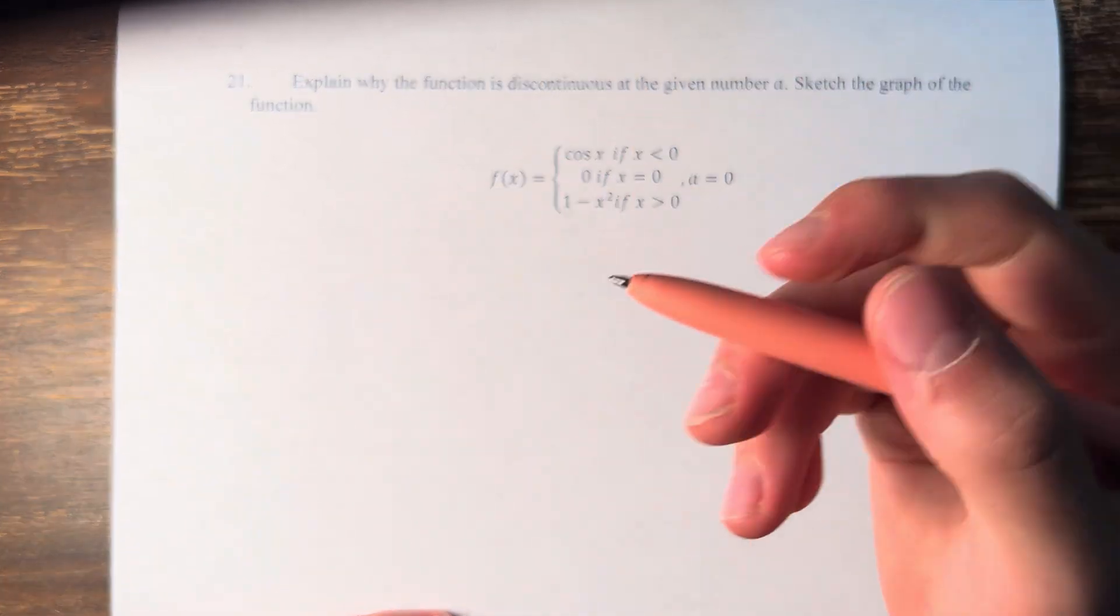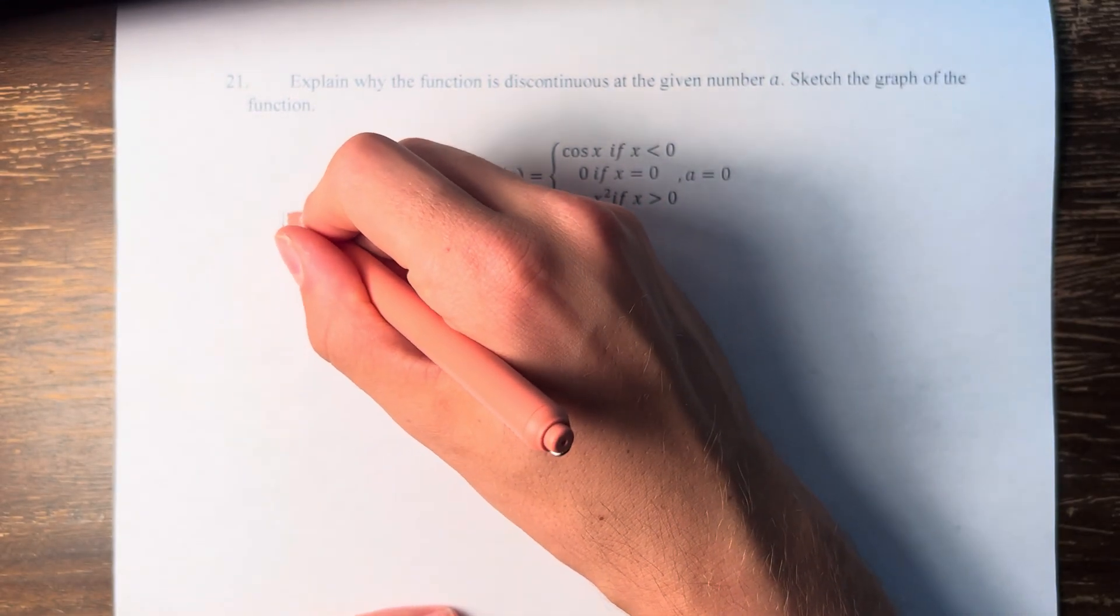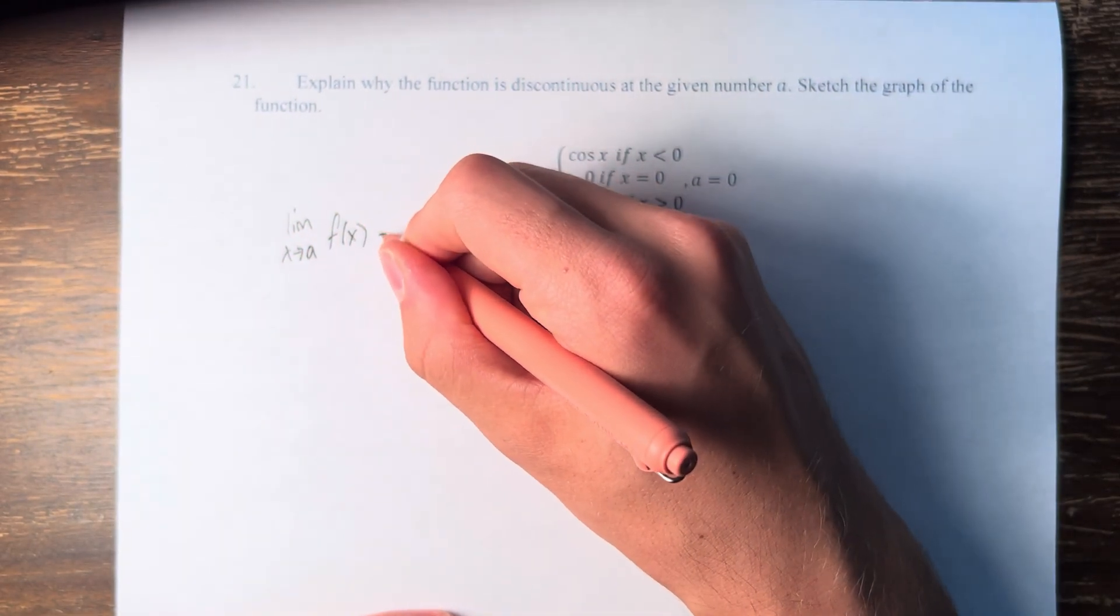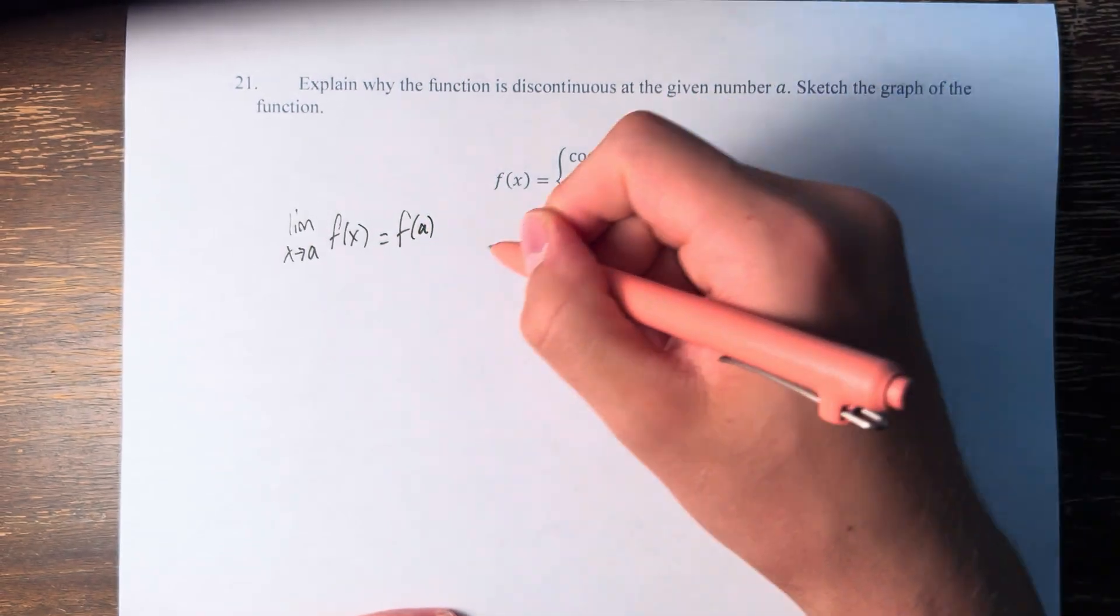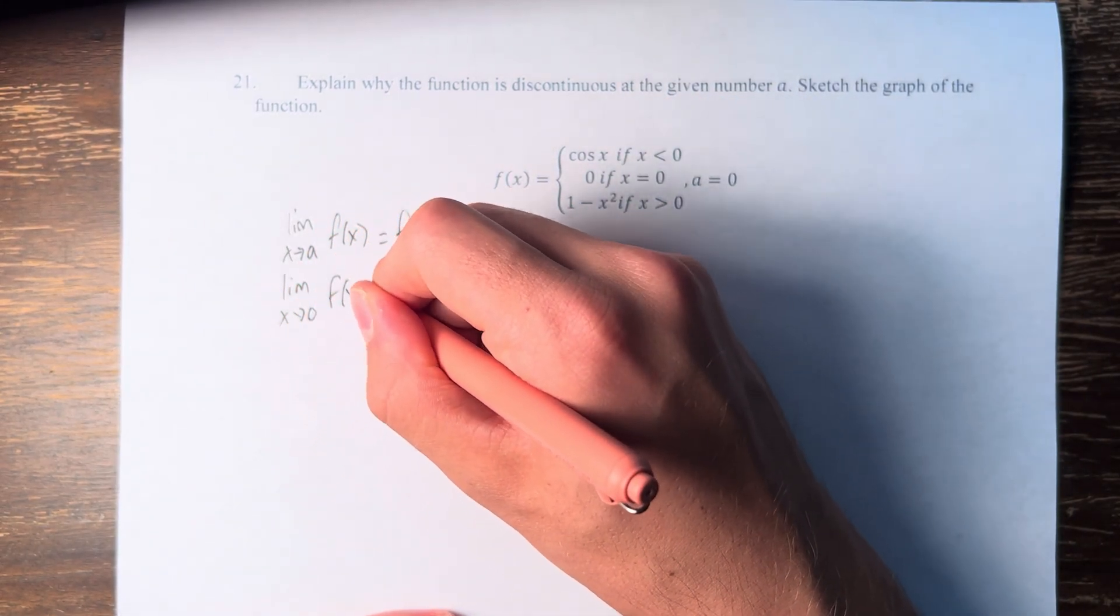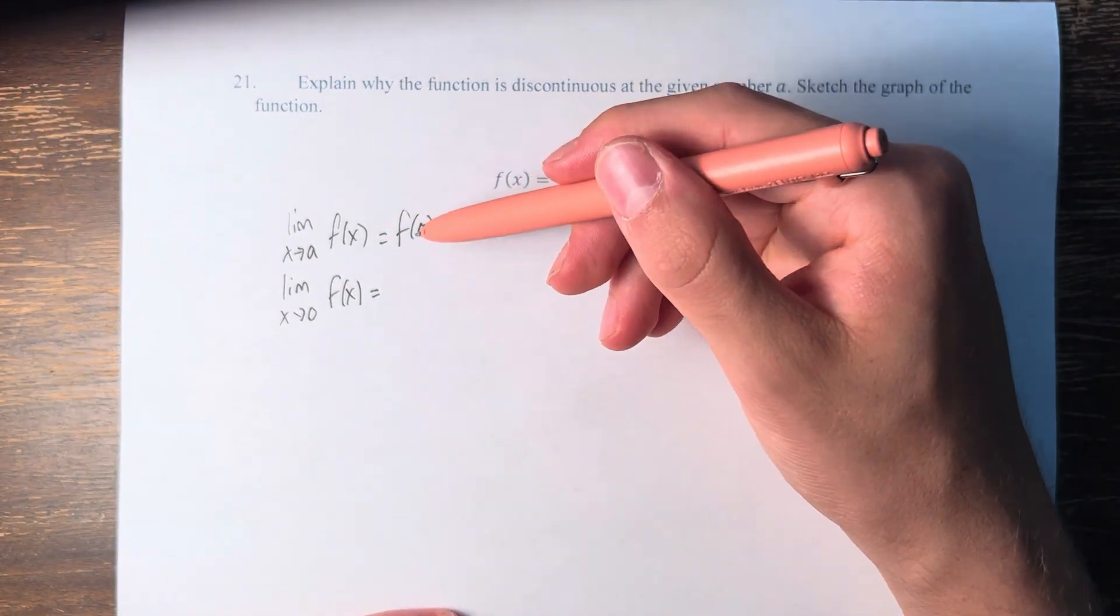First of all, the function is continuous at point a if the limit as x approaches a of f(x) is equal to f(a). So here a is 0, so we're looking to see that the limit as x approaches 0 of f(x) is equal to f(0).